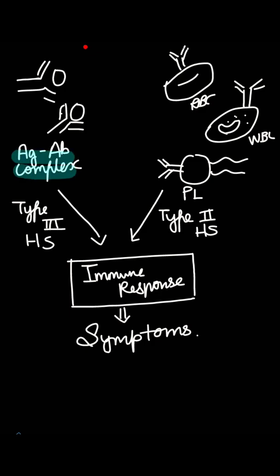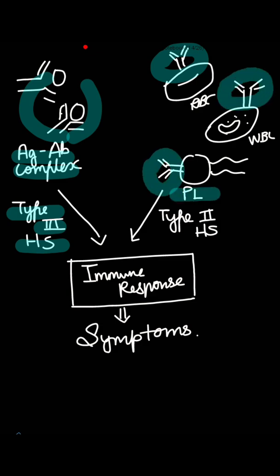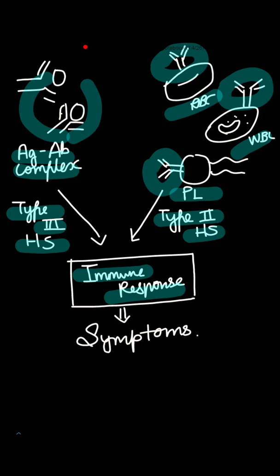This pathogenesis of antigen-antibody complex formation is called a Type 3 Hypersensitivity Reaction. Additionally, antibodies are also produced against cell contents like phospholipids, and against RBCs, platelets, and WBCs. This type of antibody formation directly against cells is a Type 2 Hypersensitivity Reaction. Together, these two types of immune responses produce symptoms in SLE.